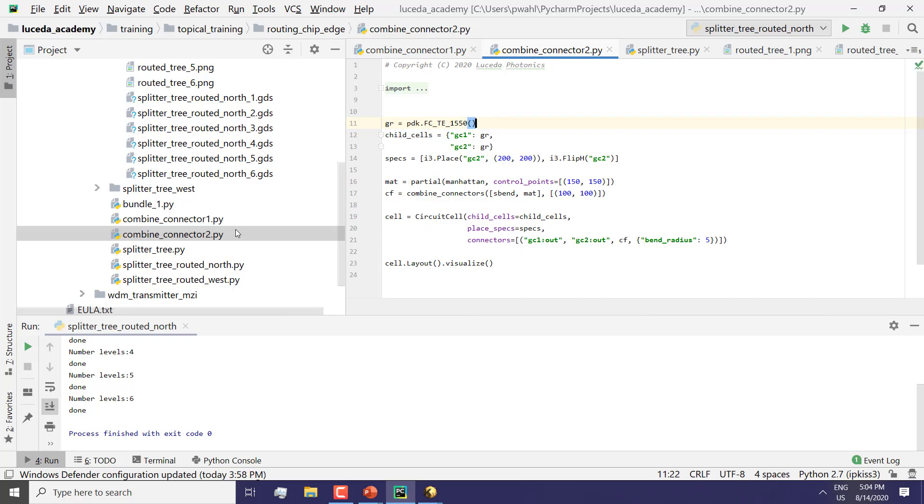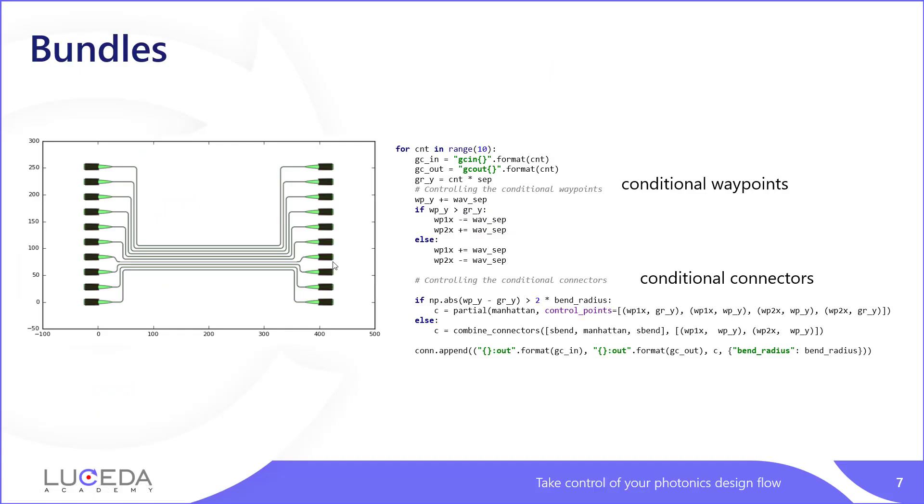The next thing I want to explore with you are waveguide bundles. Waveguide bundles are pretty simple conceptually. You have a set of input ports that are fanned to a centralized bundle, and once they arrive at their destination, more or less, they fan out again to their destination output ports.